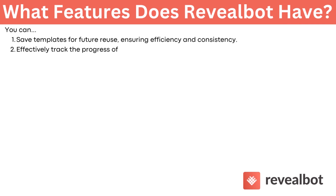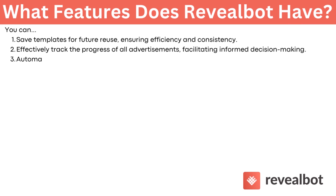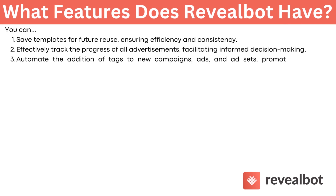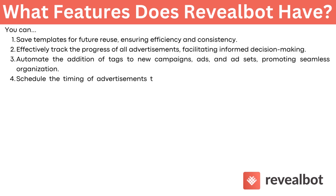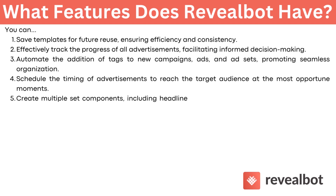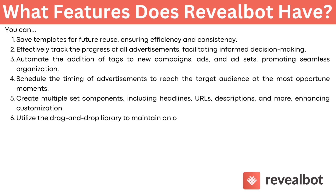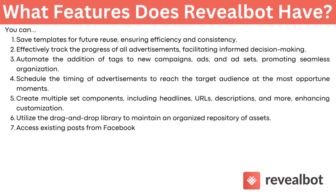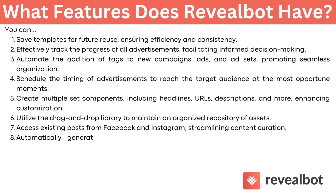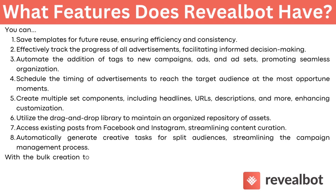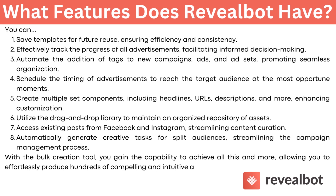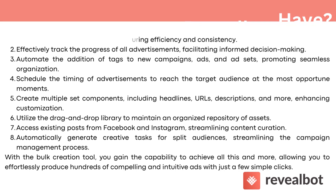You can effectively track the progress of all advertisements, automate the addition of tags to new campaigns, ads, and ad sets, and schedule the timing of advertisements to reach the target audience at the most opportune moments. You can create multiple ad components including headlines, URLs, descriptions, and more. Utilize the drag-and-drop library to maintain an organized repository of assets, access existing posts from Facebook and Instagram, and automatically generate creative tests for split audiences. With the bulk creation tool, you can produce hundreds of compelling ads with just a few simple clicks.